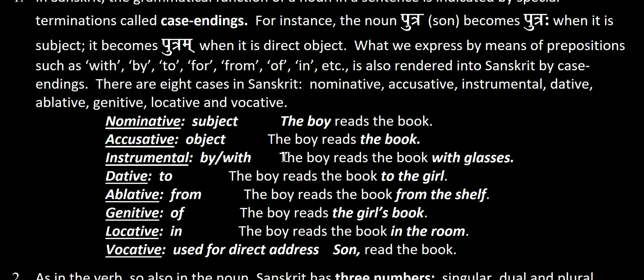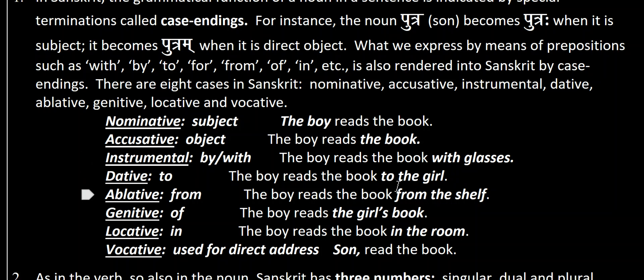Instrumental means 'by' or 'with' — for example, 'the boy reads the book with glasses'; the glasses here are instrumental. Dative means 'to' — for example, 'the boy reads the book to the girl'; the phrase 'to the girl' adds detail showing direction, indicating who he is reading the book to. That is dative.